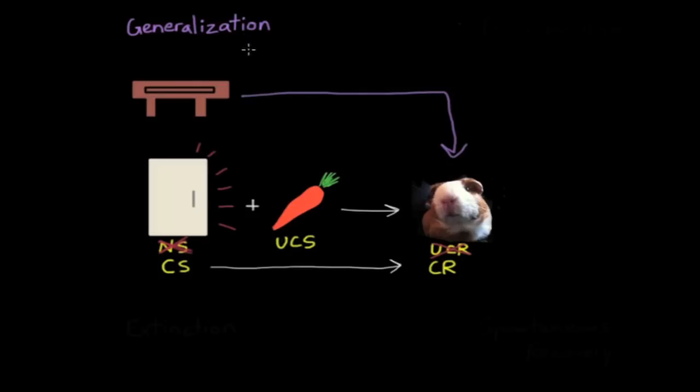And generalization has an adaptive value to it because it allows us, whether we're talking about humans or other animals, to make an appropriate response to similar stimuli. For instance, you may know exactly what your best friend's smile looks like and their smile probably elicits feelings of joy in you. However, when it comes to meeting someone new for the first time, if you see them smile at you, it will probably also elicit feelings of joy. So that's the idea behind generalization.